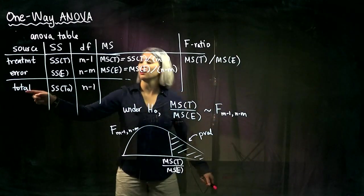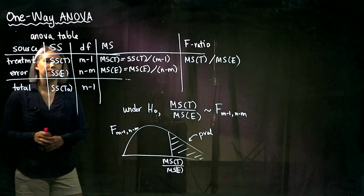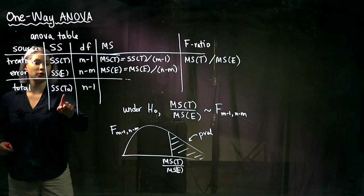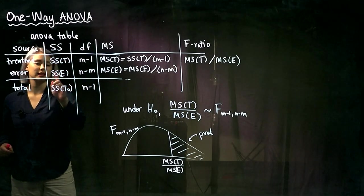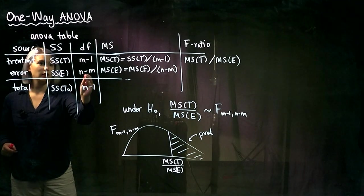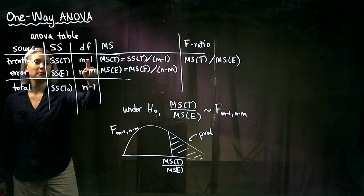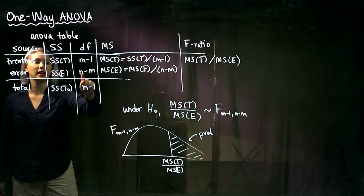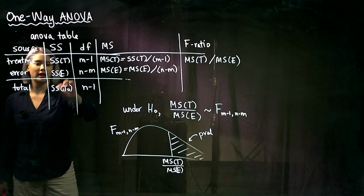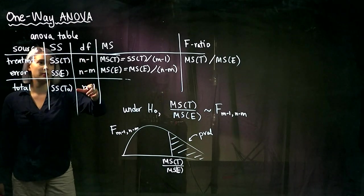So when we look at the total, this total will add. So remember, the total sum of squares is equal to SST plus SSE. Similarly, the total degrees of freedom equals N minus one, which is M minus one plus N minus M. So sum of squares and degrees of freedom add.